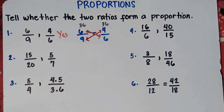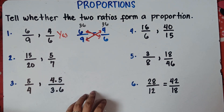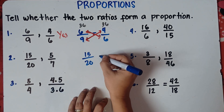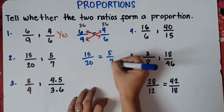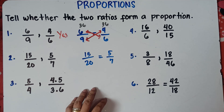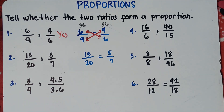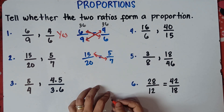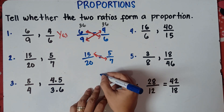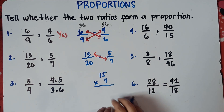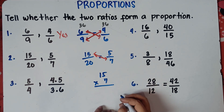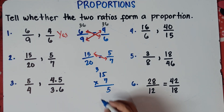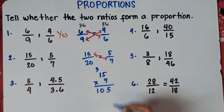Let's have number two. We can write this as 15/20 = 5/7. Let's check if these two ratios will form a proportion using cross multiplication. We multiply 15 times 7. So 7 times 5 is 35, carry 3; 7 times 1 is 7, plus 3 is 10. So that would be 105.